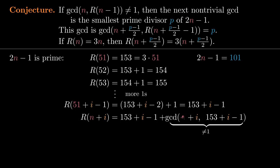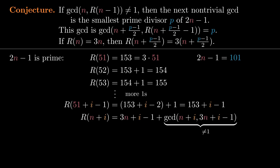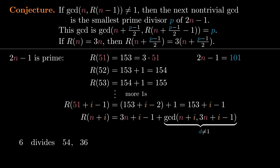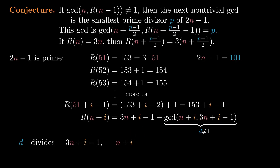Let's rewrite 51 as n to work in slightly more generality — here's where we use that R(n) is 3n. Let's call this GCD D for divisor, and we're assuming D is not 1. The conjecture is that D is the smallest prime divisor of 2n minus 1. To see why, we'll use the fact that a number dividing two others also divides their difference. For example, 6 divides 54 and 36, so 6 also divides 54 minus 36. Similarly, D is a common divisor of n plus i and 3n plus i minus 1, so D also divides their difference. The i's cancel and what's left is 2n minus 1, so D divides 2n minus 1.